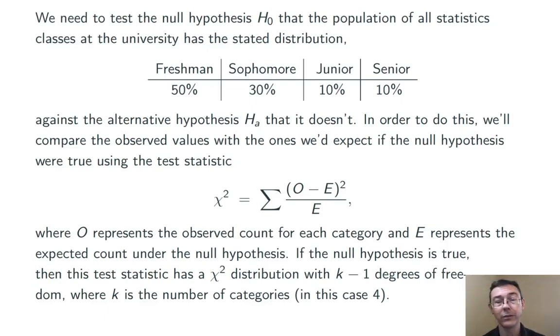So, in this case, we have 4 categories. k is 4, so we're in the distribution chi-squared of 3.